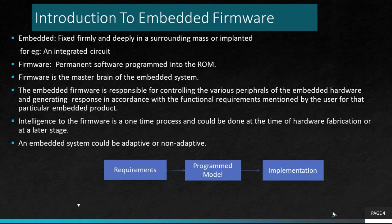An embedded system can be considered adaptive or non-adaptive. This can be explained with an example. Consider a young newborn baby — on seeing fire for the first time, the baby may be fascinated by its illumination and try to touch it. But once it has sensed the heat, the very next time it sees fire, it understands that fire gives heat and causes harm, so the baby doesn't touch it. This is what adaptive means. We human beings are adaptive in nature — we learn from our mistakes.